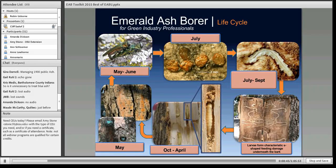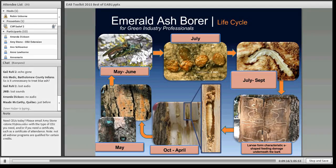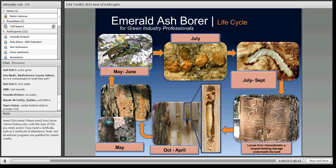The emerald ash borer has a one-year life cycle with one generation per year. Right now, larvae are about a half inch beneath the bark, waiting for warmer weather. They will go from larva to pupa, then chew a D-shaped exit hole around the time the black locust is blooming in May and come out of the trunk. Females must feed on leaves to mature their eggs, then they mate and lay eggs in July. The eggs hatch directly through the eggshell into the trunk without crawling on the bark surface, and the larvae begin feeding on the phloem.